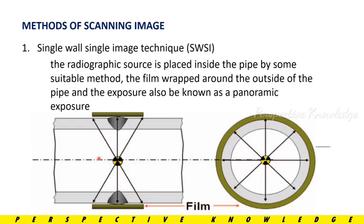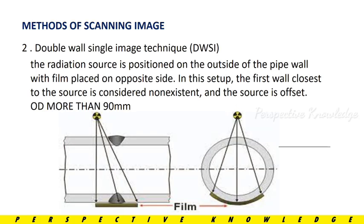For the Single Wall Single Image technique: the radiation source is placed at the center of the hollow surface pipe. The radiation spreads out and scans the welding area. On the inner hollow surface, we place the radiation source, and on the outer surface we set the film. We scan the radiation from the source through to the film to generate the output.